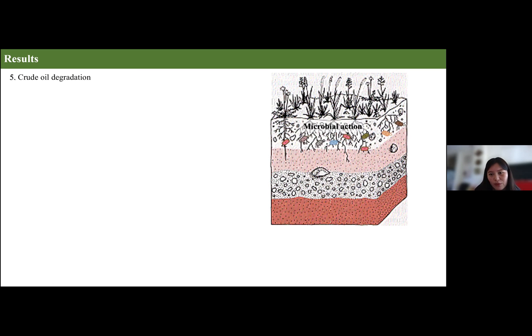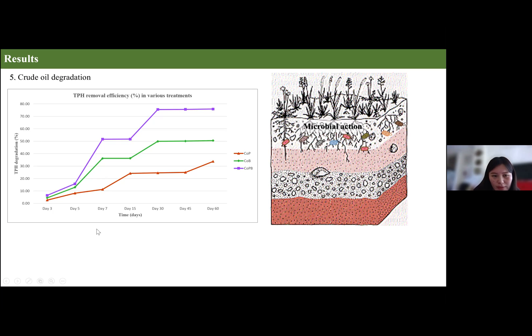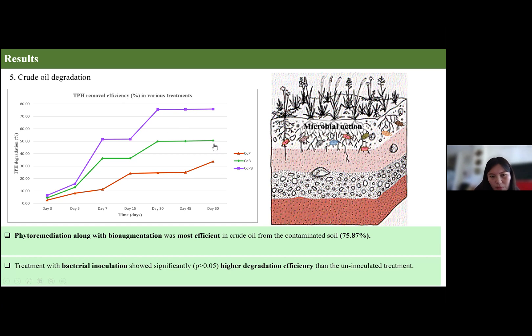Moving on to crude oil degradation, which mostly happens because of microbial action, specifically Pseudomonas putida. The treatment which had the combination of plant and bacteria had the highest removal of crude oil from the soil with an efficiency of 75.87%, meaning more than 75% of crude oil degradation happened. The treatment in which bacteria was inoculated had better degradation of crude oil, meaning bacteria really helps in removing crude oil from soil, unlike plants which are more effective in removing heavy metals.